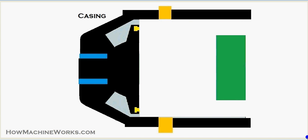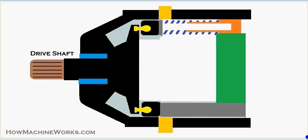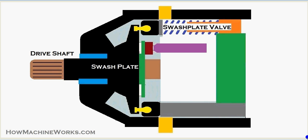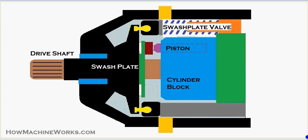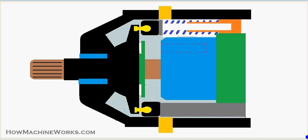First let's identify the components. Here this is the casing of the piston pump. That's our drive shaft which is actually giving the drive to the pump. There we have the swash plate adjusting valves, then we have the swash plate itself over there in green. Then comes the pistons which actually reciprocate inside the swash plate. That's the cylinder block in blue which rotates, so the pistons are arranged inside the cylinder block and they are free to slide over the swash plate. That's our outlet over there and the inlet at the top.